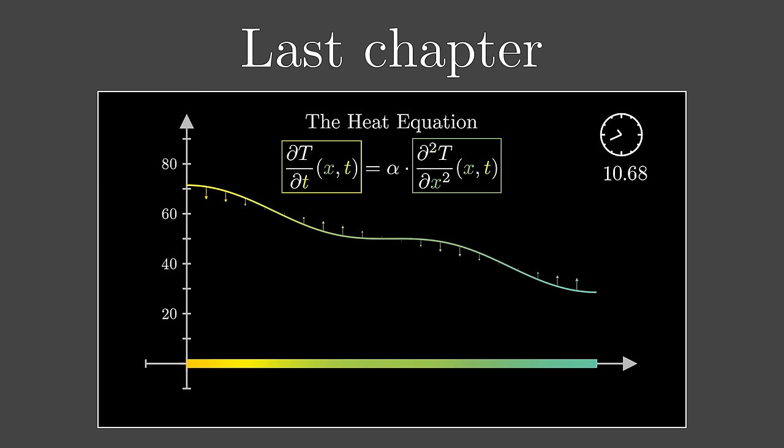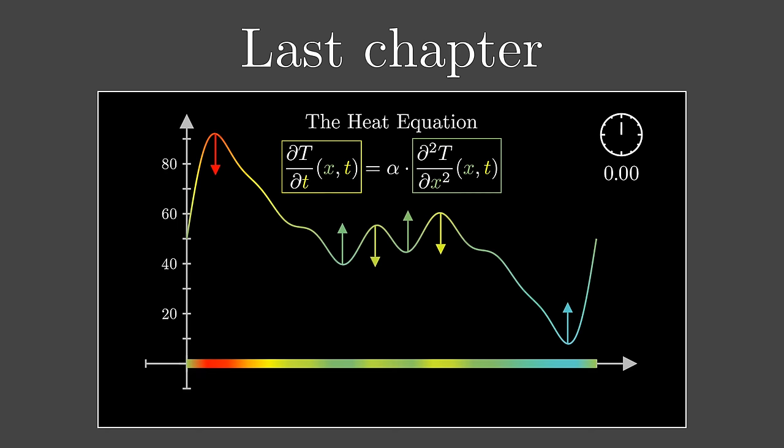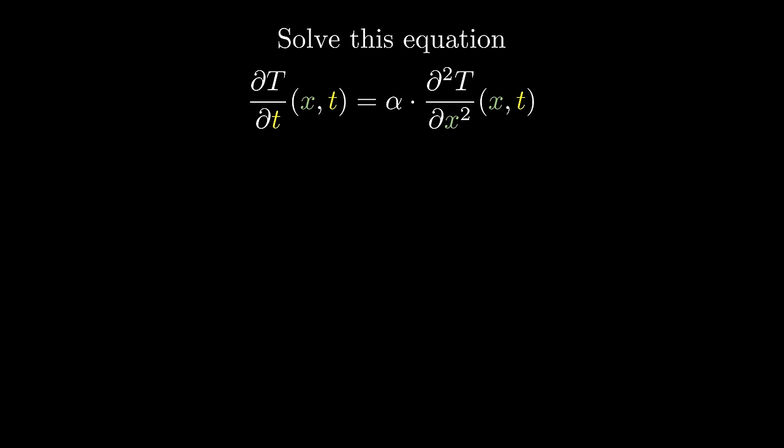It told us that the rate at which the temperature at a given point changes over time depends on the second derivative of that temperature at that point with respect to space. Where there's curvature in space, there's change in time.